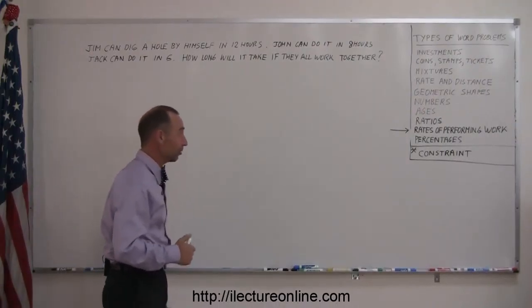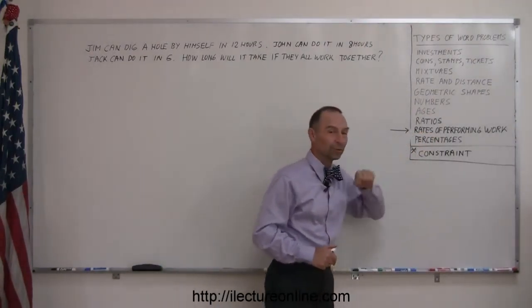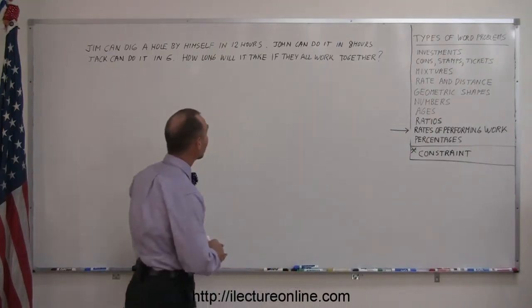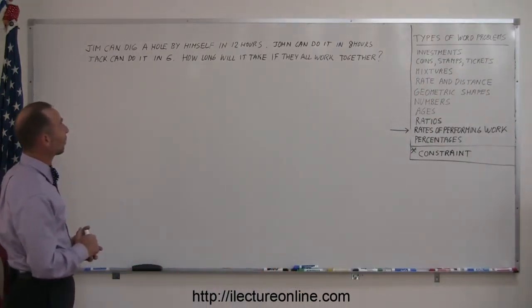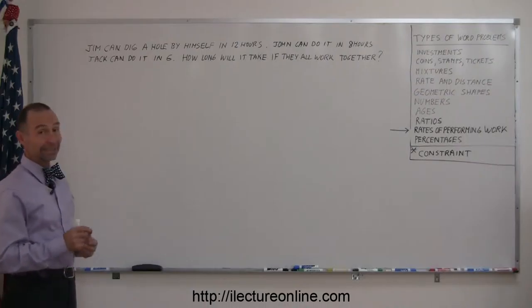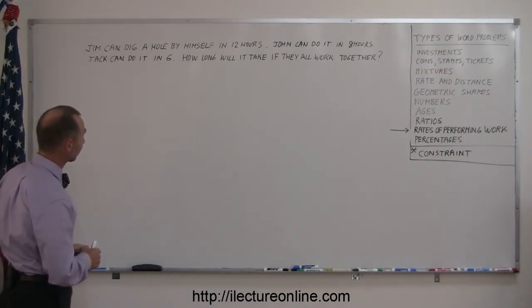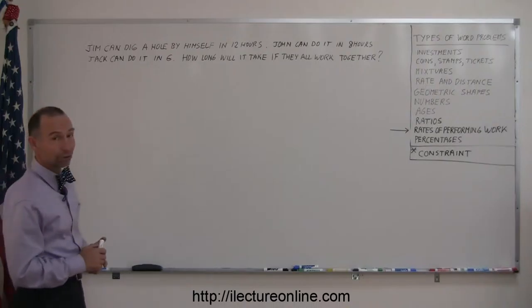A good example of a word problem in algebra where you deal with rates of performing work. In this case we have three people doing the work. We have Jim who can dig a hole by himself in 12 hours, John can do it in eight hours and Jack can do it in six. How long will it take if they all work together?